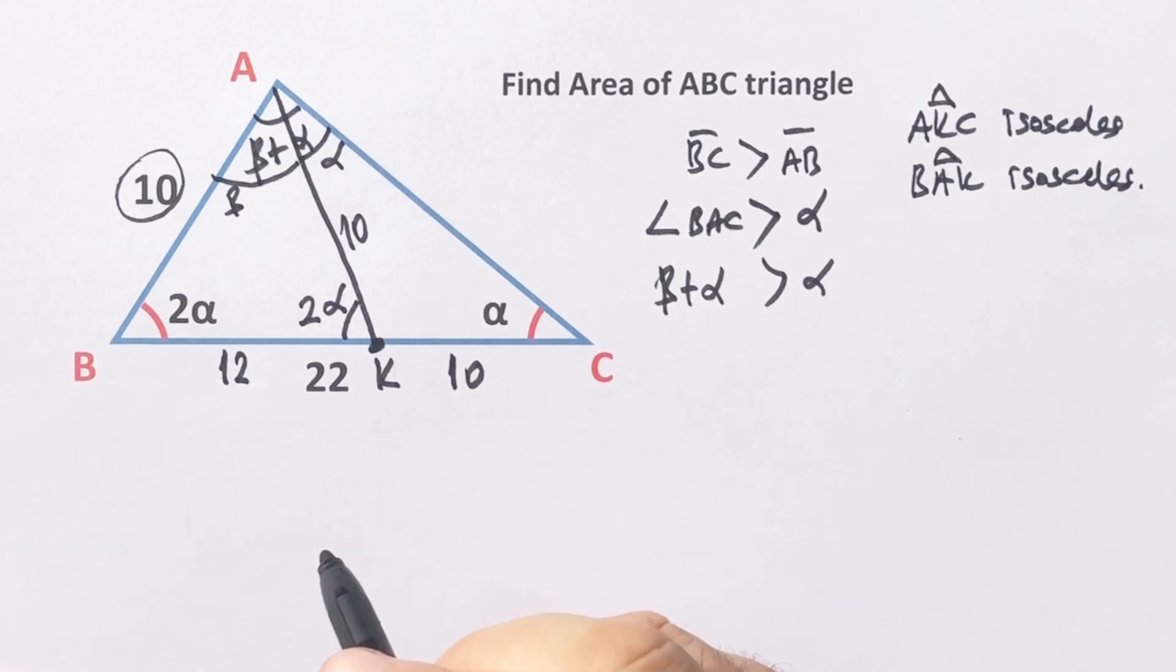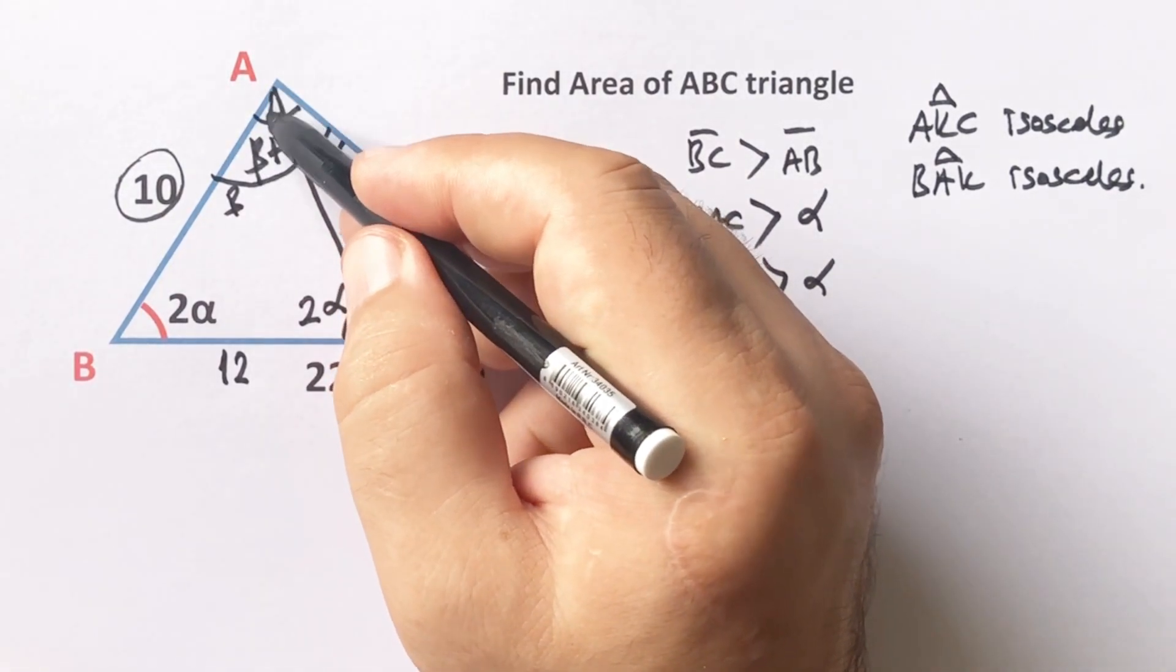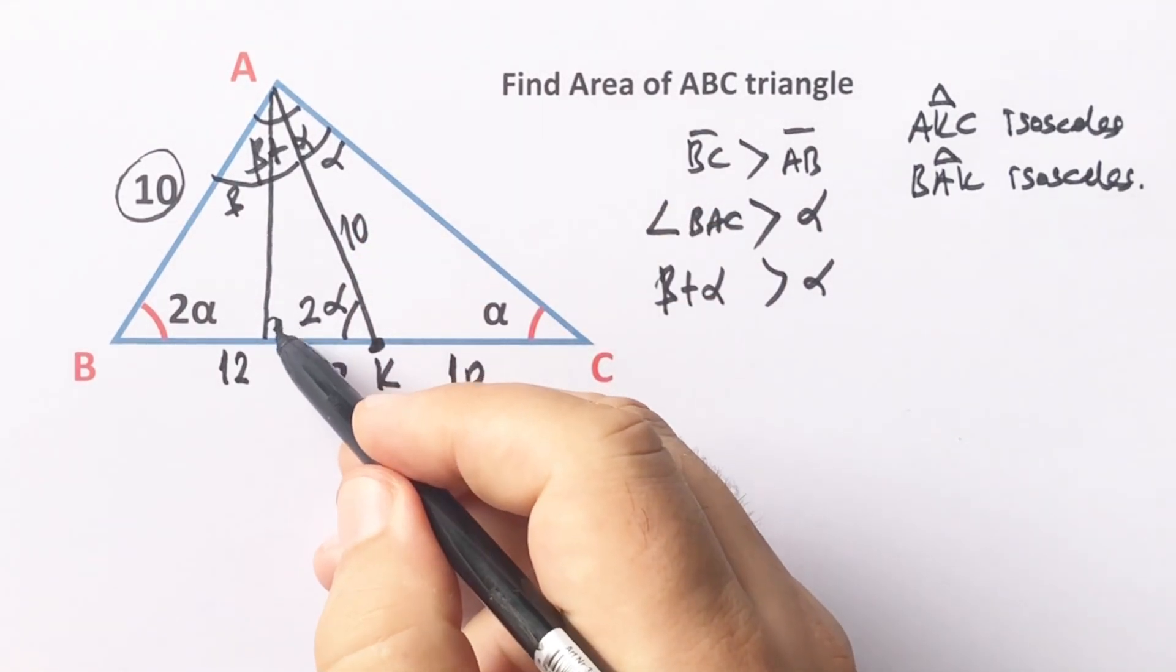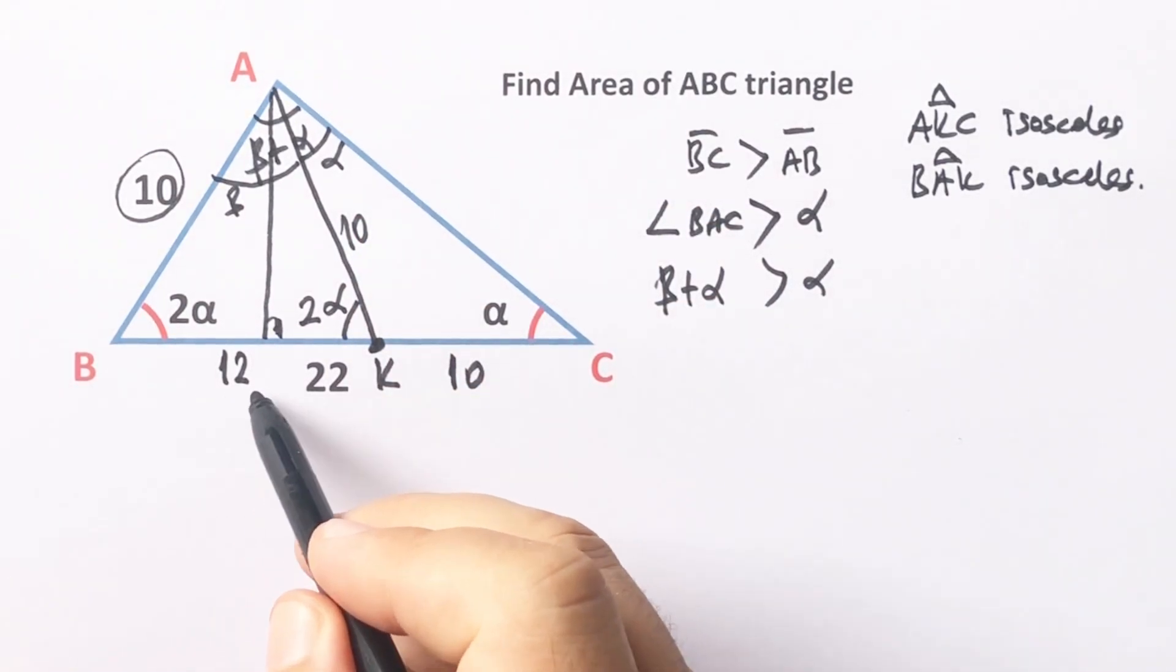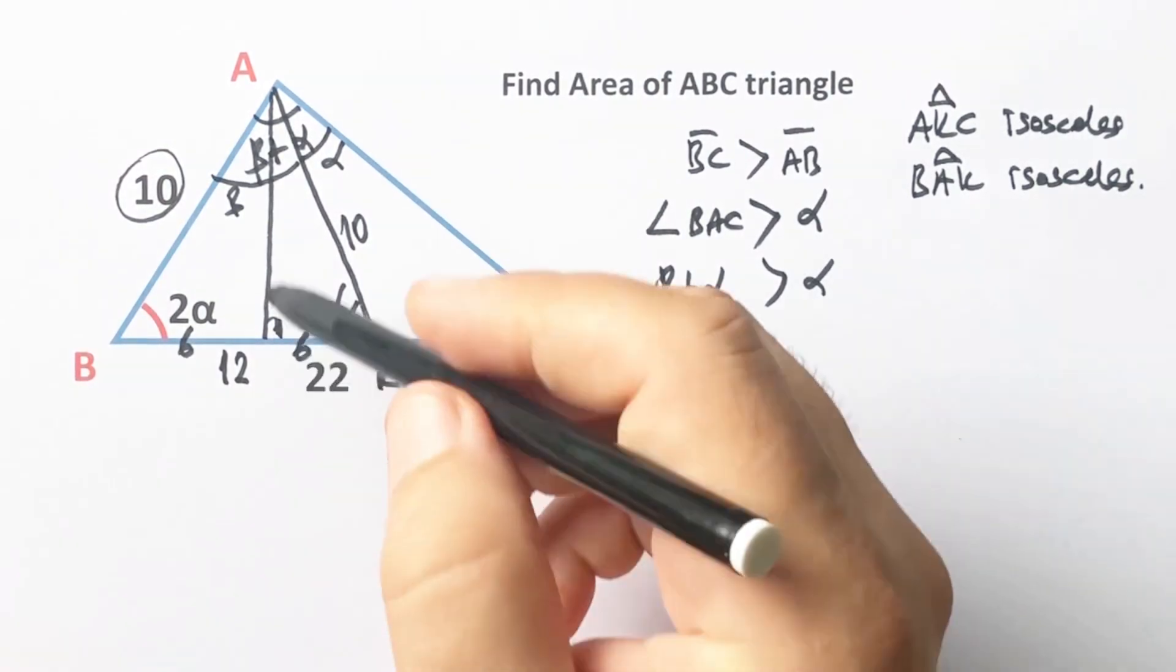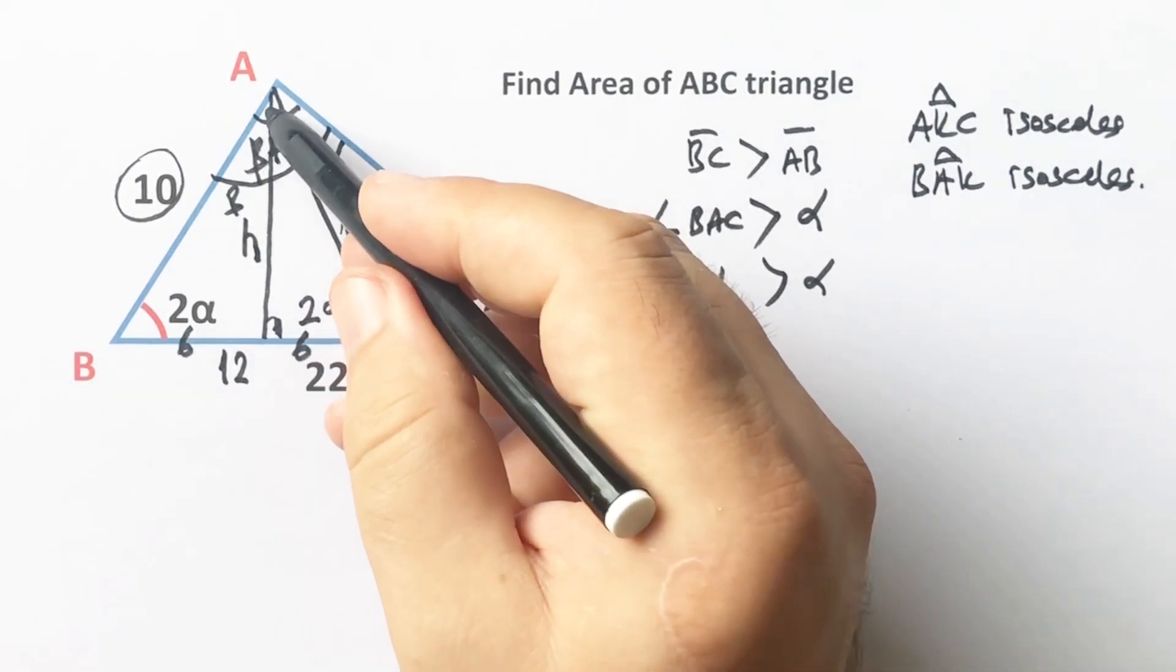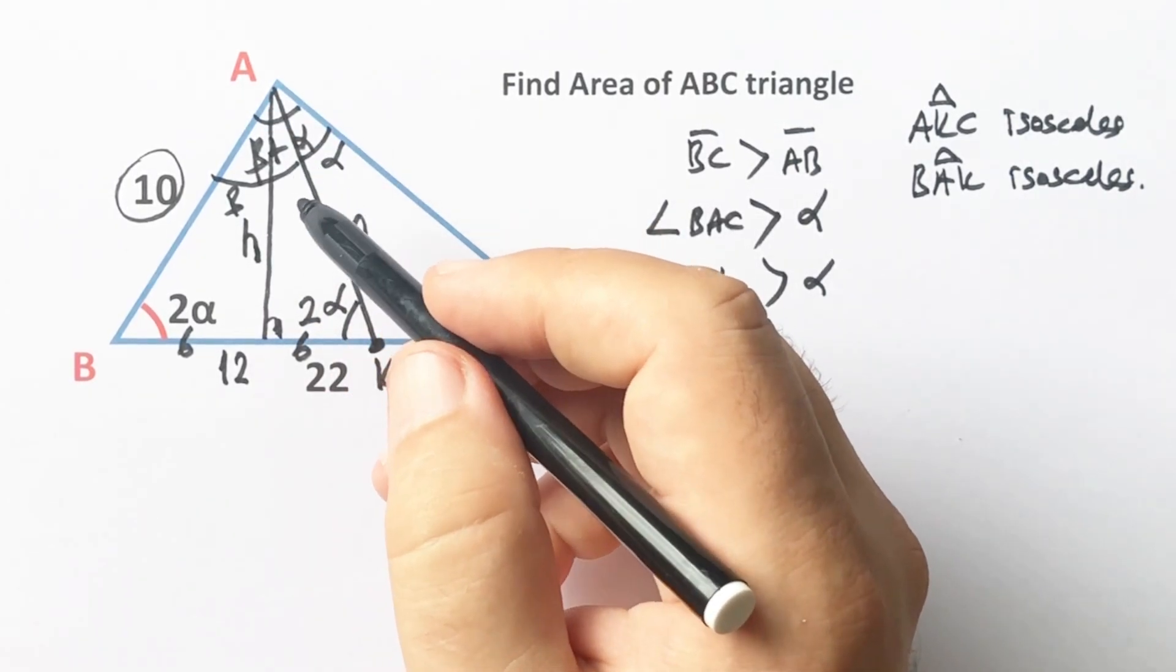We know that if we draw a perpendicular line, the base will be divided into two equal parts. So these are must be 6 units. Let's call here h for this triangle.